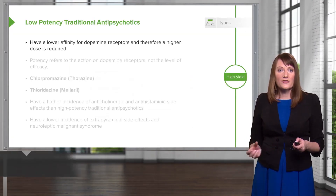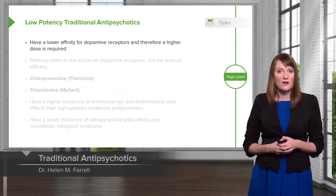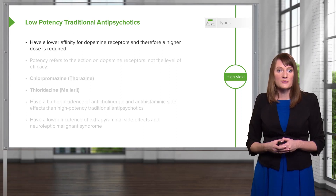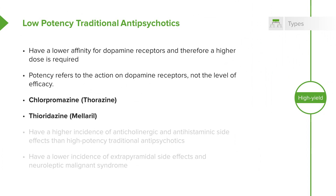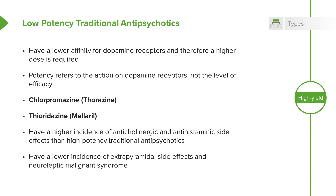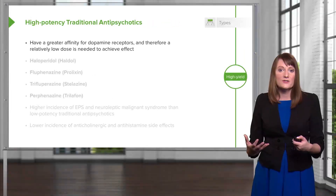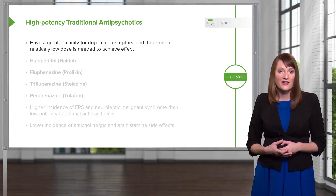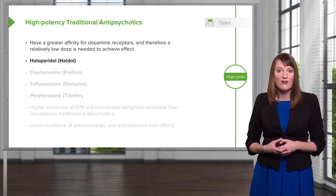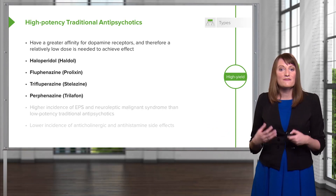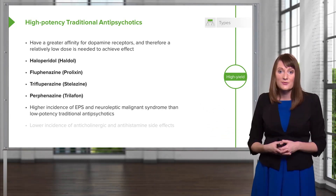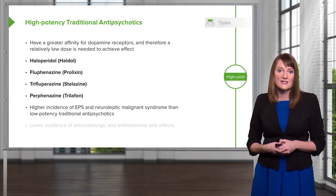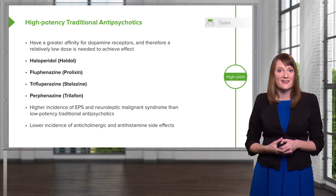The low-potency typical antipsychotics have a lower affinity for the dopamine receptor. Examples include chlorpromazine and thioridazine. There is a higher incidence of anticholinergic effects with these medications, a lower incidence of extrapyramidal side effects, and a lower incidence of neuroleptic malignant syndrome, which can be a deadly side effect. The high-potency typical antipsychotics have a very high affinity for dopamine blockade and include haloperidol and fluphenazine. There is a very high incidence of EPS and neuroleptic malignant syndrome with these, but a lower incidence of anticholinergic and antihistamine problems.